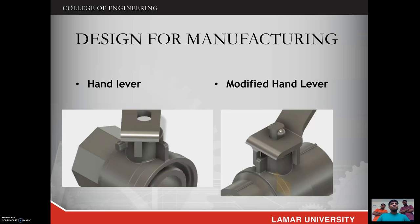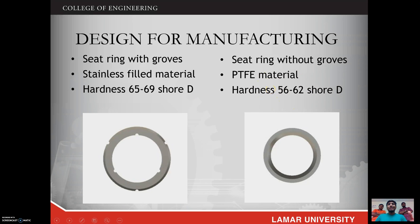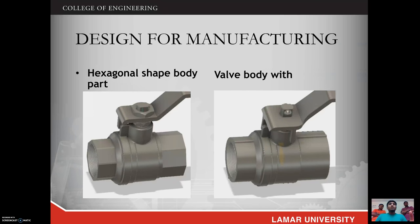For the Design for Manufacturing of the seat ring: in the conventional seat ring, grooves are provided because water pressure can cause cracking or damage, and the grooves absorb that pressure. We removed those grooves and changed the material from steel to polytetrafluoroethylene (PTFE). PTFE has lower hardness and is a soft material, so it automatically absorbs water pressure. This means we don't need to machine grooves, saving manufacturing cost.